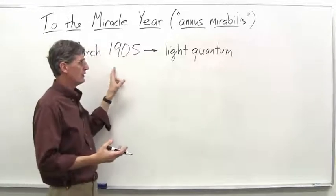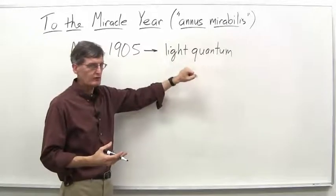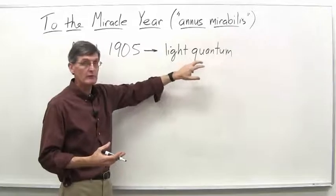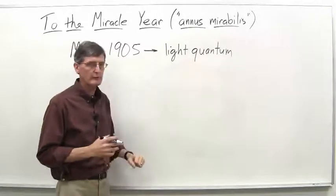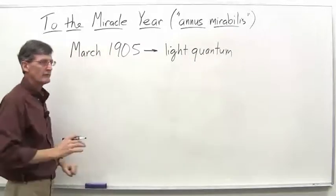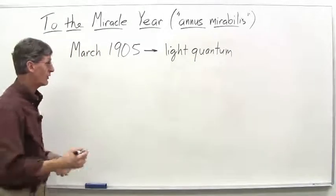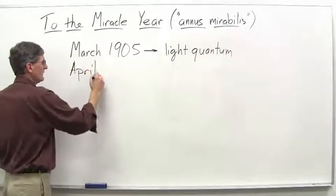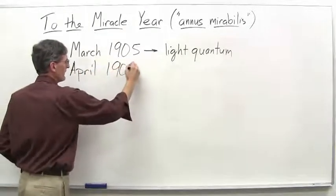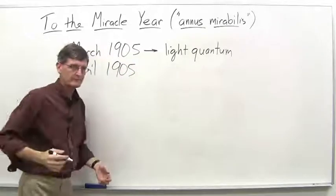And he was able to, using this idea, show that some experimental results that couldn't otherwise be explained were explained by his idea. So the idea of the light quantum, that's in March. Next month, April 1905. This is all 1905, so I guess we don't need to put the years, but we will.